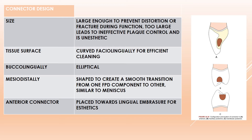The tissue surface of the connector should be curved faciolingually for efficient cleaning. Buccolingually, it should be elliptical in shape. Mesiodistally, it is shaped to create a smooth transition from one FPD component to another, similar to a meniscus. In anterior connectors, they should be placed towards the lingual embrasure for aesthetics, as placing them towards the buccal embrasure would compromise aesthetics.